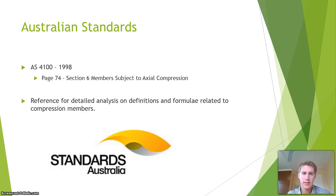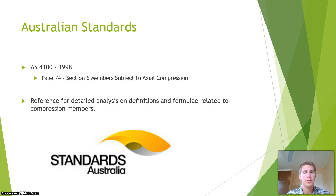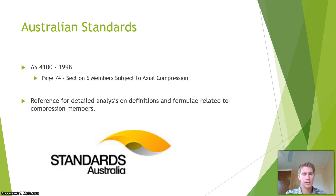So your Australian standards. Looking into steel, you have AS4100 — on page 74, section 6: members subject to axial compression. Admittedly, this went over my head, but the research here is a great reference for definitions and formulas. Some of the formulas discussed earlier are covered in far more complexity than what I described in this presentation. For any steel columns, that is your reference.